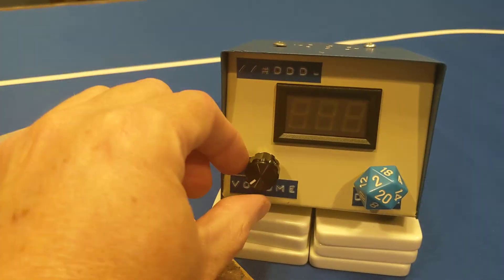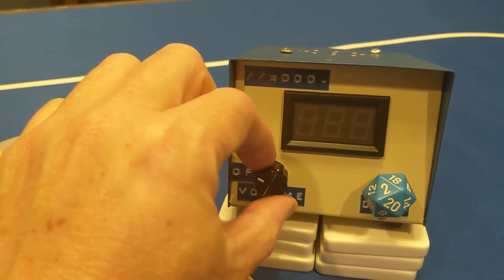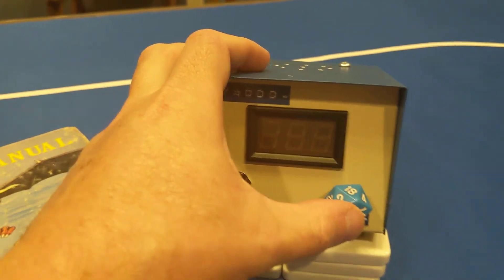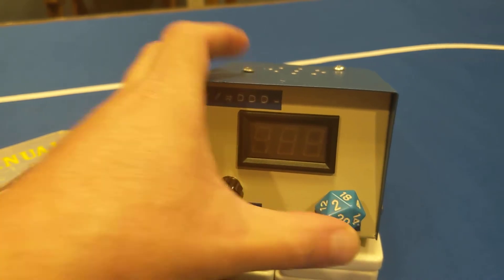This one, let's see, go ahead and turn it on. It's got an on-off volume. Plenty of volume. And let's go ahead and roll a d20 as it's set to by default.